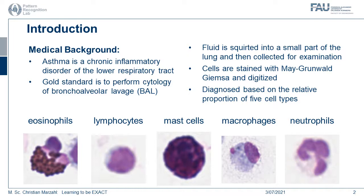Asthma is a chronic inflammatory disorder of the lower respiratory tract system. The gold standard for detecting asthma in the field of veterinary pathology is the performance cytology of a bronchoalveolar lavage fluid. This fluid is collected from the lung of the horse, stained with May-Grünwald and digitalized using a whole slide image. Then asthma is detected based on the relative proportion of five types of cells, as you can see at the bottom of the slide. There are many more cells in these samples, but we are just interested in the proportion of these five.